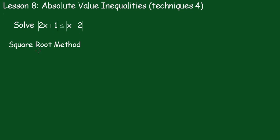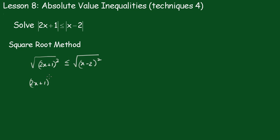The square root method — this is probably the only occasion where the square root method is the preferred technique, only because it's a bit shorter. The reason is because the absolute values are positive on both sides, so by squaring both sides you won't be affecting anything at all. We'll replace that with: the square root of (2x plus 1) all squared is less than or equal to the square root of (x minus 2) all squared. Squaring both sides, we get (2x plus 1) all squared is less than or equal to (x minus 2) all squared.